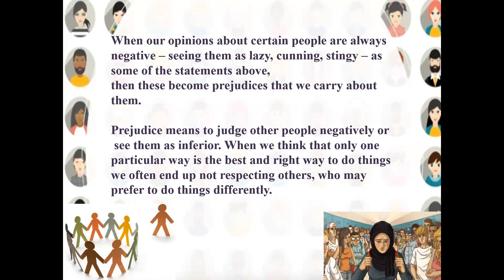When our opinions about certain people are always negative — seeing them as lazy, cunning, or stinky — these become prejudices that we carry about them. We need to understand that there are two kinds of discrimination which people often face. The first is prejudice and the second is stereotyping. We are going to look at these two words one by one. First, let us study what we mean by the term prejudice.